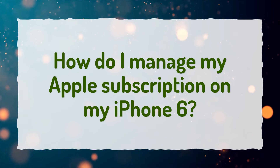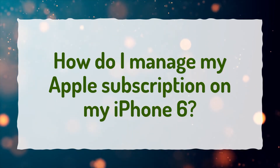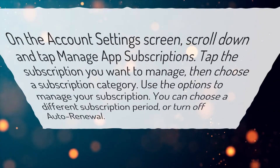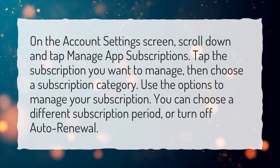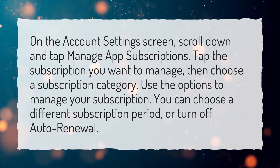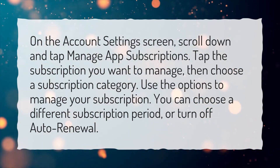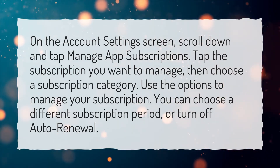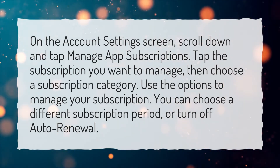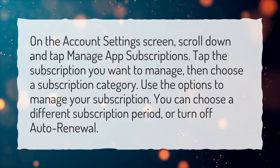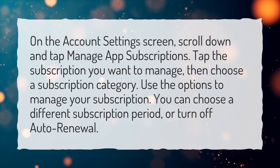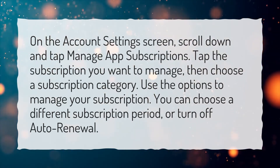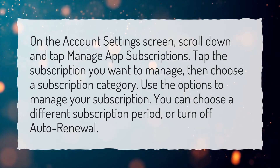How do I manage my Apple subscription on my iPhone 6? On the account settings screen, scroll down and tap Manage App Subscriptions. Tap the subscription you want to manage, then choose the subscription category. Use the options to manage your subscription — you can choose a different subscription period, or turn off auto-renewal.